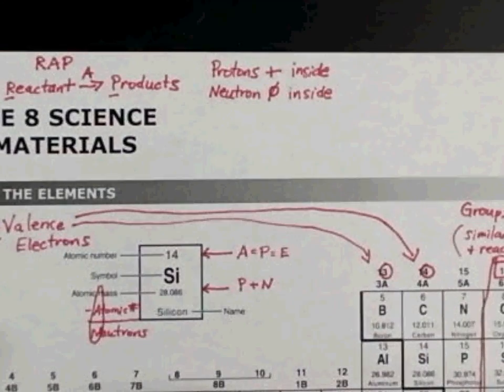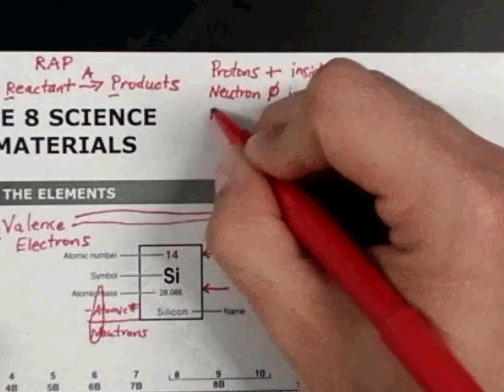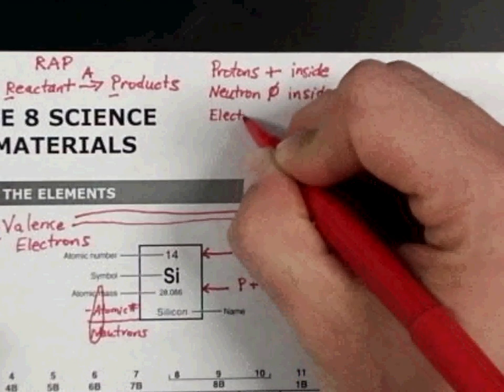And then the electron, which is negative, and found outside the nucleus.